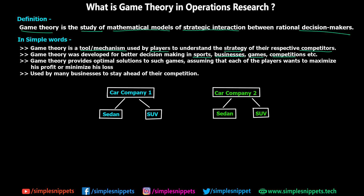So what does game theory exactly do? Game theory provides optimum solutions for games, assuming that each player wants to maximize their profit or minimize their loss. For example, if there are two businesses competing in the same domain, each of them wants to maximize their profit and minimize their loss. If they understand each other's strategy, they can act accordingly.